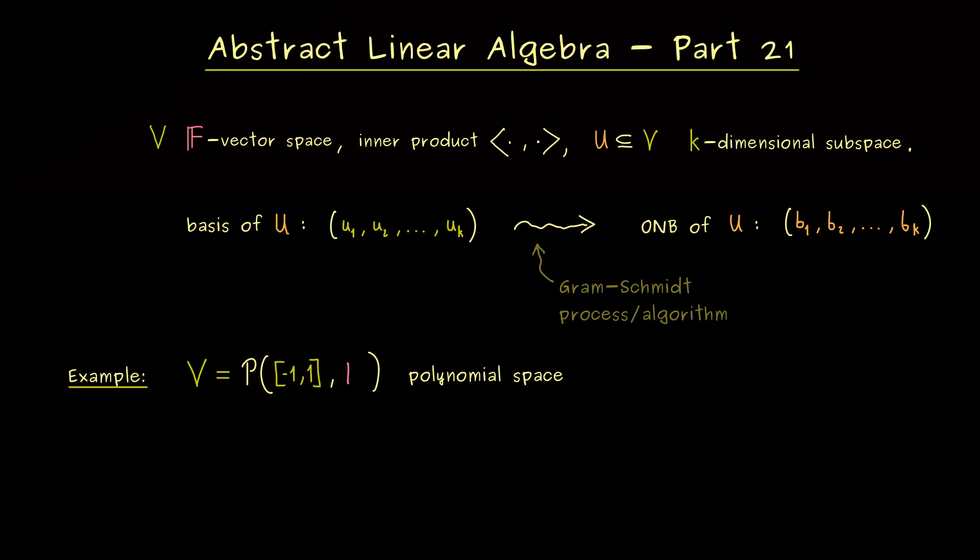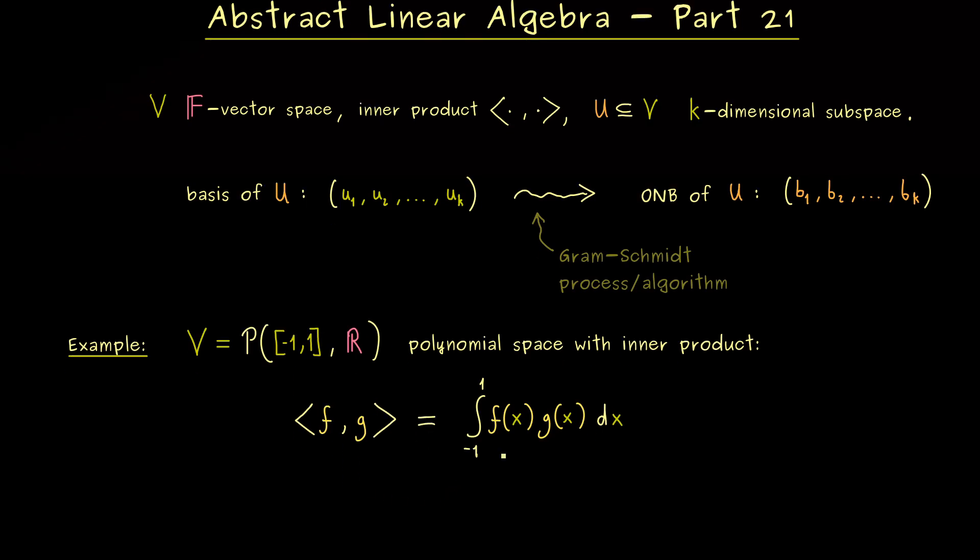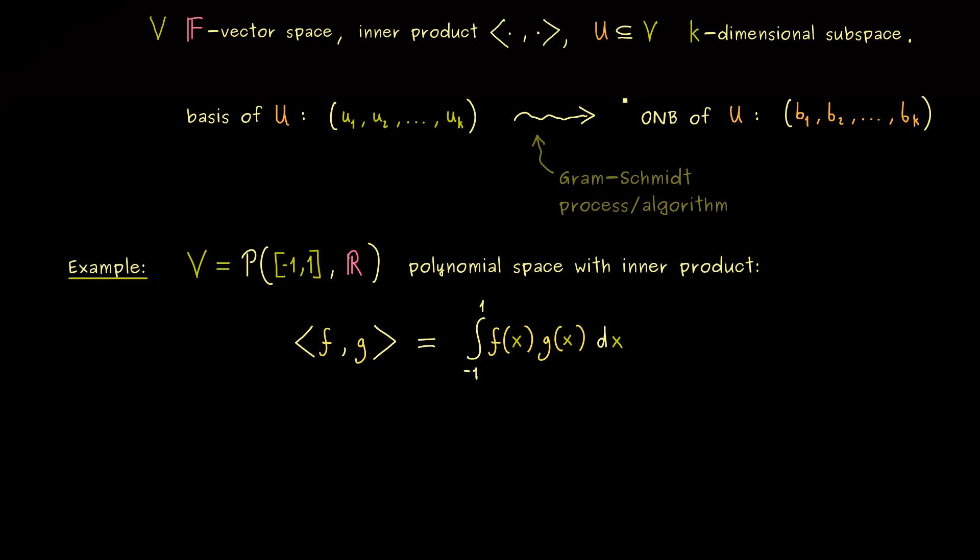I think this might be very helpful to understand the algorithm. For this let's take the real vector space given by the polynomial space, polynomials from the domain minus 1 to 1 into R. We take this one because there we already know a nice inner product given by an integral. For the real vector space it means we integrate the product of the two polynomials from minus 1 to 1. So this is a well defined inner product.